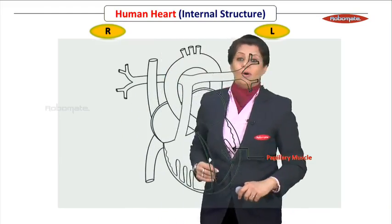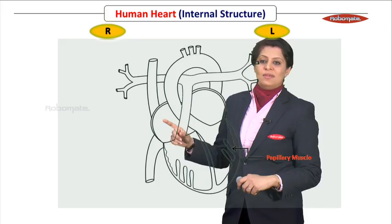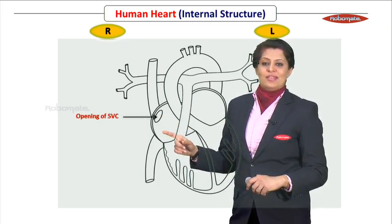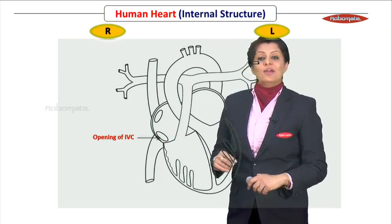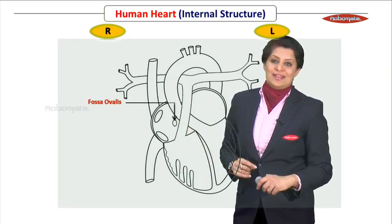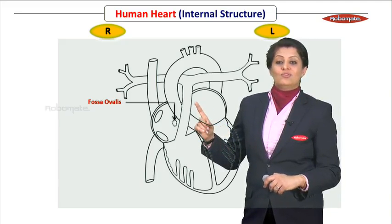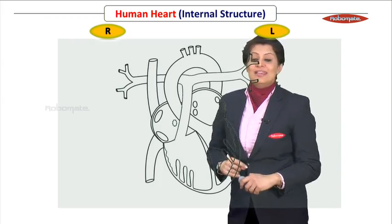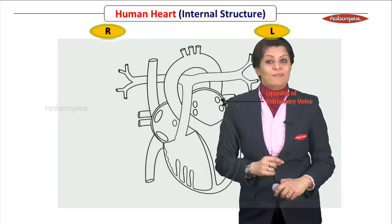Now we need to draw what structures are present inside each chamber, starting with the right atrium. In the right atrium, draw the opening of the superior vena cava, and similarly the opening of the inferior vena cava. Also in the right atrium, observe a depression — this is called the fossa ovalis. For the left atrium, draw four openings — two on one side and two on the other — these are the openings of the four pulmonary veins.